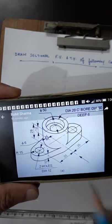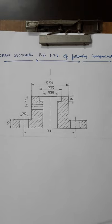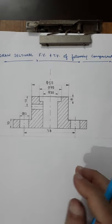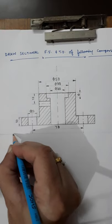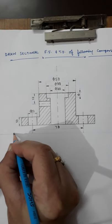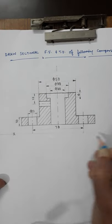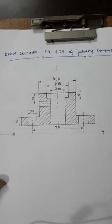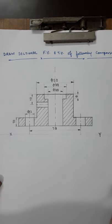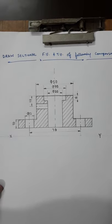Now I will do the dimensioning as per the aligned system. You can also add X and Y labels. So this is the completed sectional front view. Now I will draw the top view only. Thank you very much.